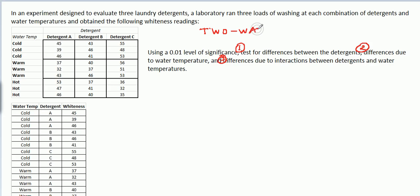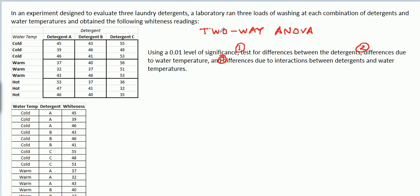But before we jump in to those hypothesis tests, let's understand the structure of this data and the structure of the two-way ANOVA that we're about to perform. So, what are the factors? Factor A — it doesn't matter which factor you talk about first.